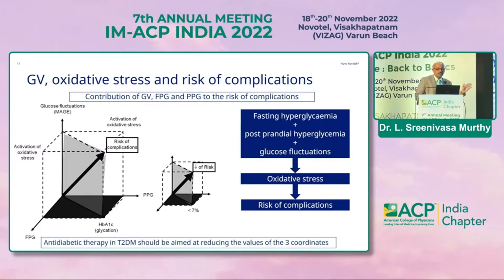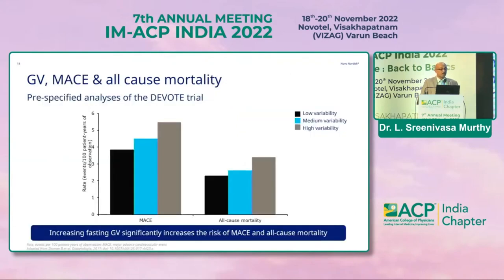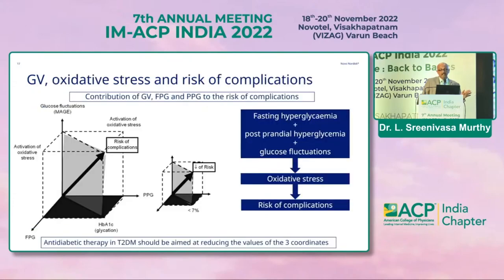This is the pathophysiological illustration where the impact of excessive glycation of proteins, activation of oxidative stress, and the three components — fasting hyperglycemia, postprandial hyperglycemia, and glucose fluctuation — eventually result in risk of complications. Glycemic variability and MACE and all-cause mortality: you can see in this slide that increasing fasting glycemic variability means the patient will have increased risk of MACE and all-cause mortality.